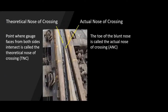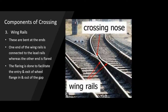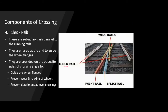Then we saw the wing rails — the components on both sides of the V-shape crossing or crossing nose — provided to maintain the gap so that the flange crosses properly. Then we have check rails: from the name itself it derives its function — it keeps in check the flange of the wheel so that it doesn't derail or leave the rail it is supposed to traverse. Check rails are provided at the crossing section and also at sharp curves to prevent derailment.